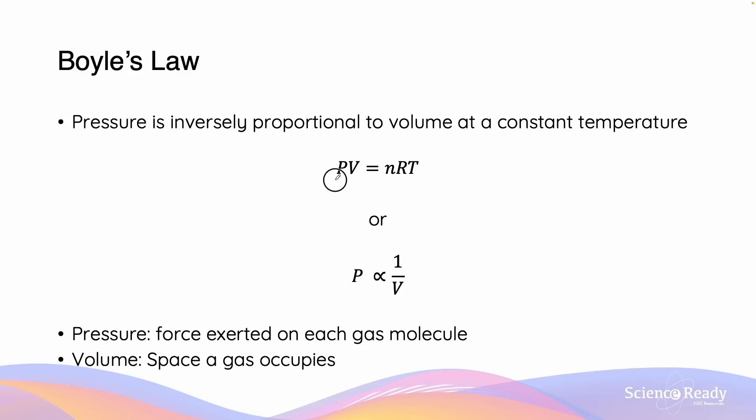The ideal gas law is PV equals nRT, where P is pressure, V is volume, n is amount, R is the universal gas constant, and T is temperature. In the equation, if we hold nRT constant, we can observe mathematically that an increase in P will lead to a decrease in V, and vice versa.